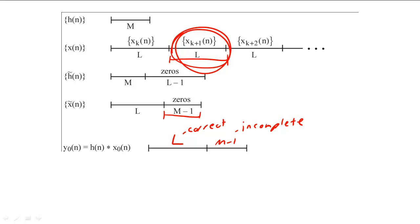While we can send the first L samples to the output of the system, we need to finish the convolution for the remaining samples.